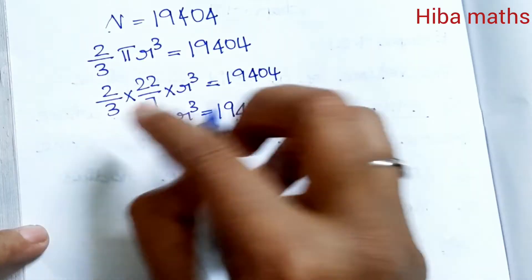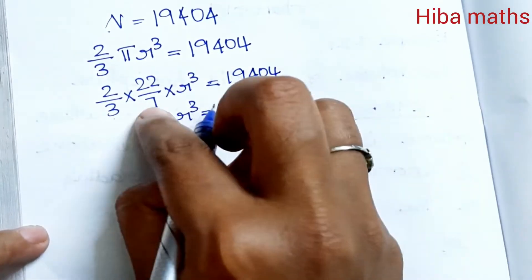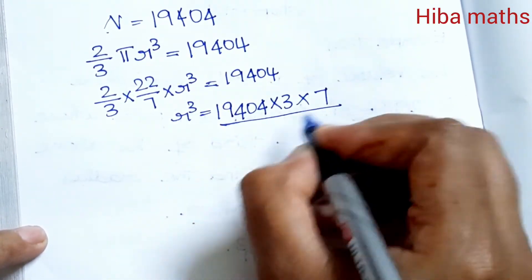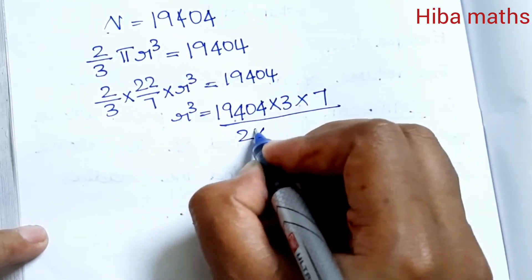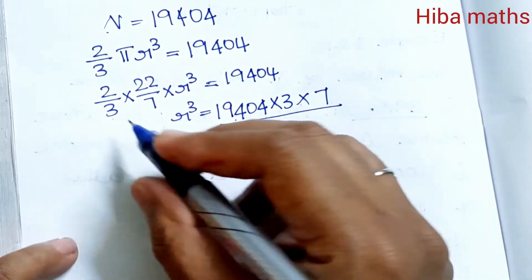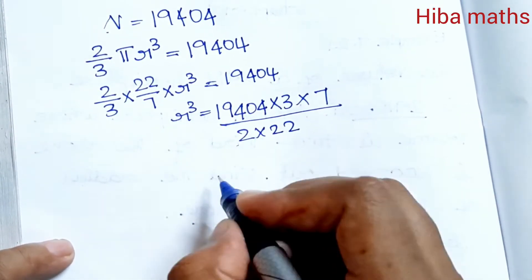So r³ = 19404 × 3 × 7 ÷ 2 × 22. Working through the multiplication and division steps to simplify.